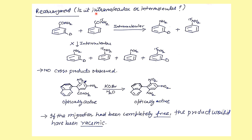The key question about the Hofmann rearrangement: is the migration intramolecular or intermolecular? Studies have shown it is intramolecular. Evidence: if you take a mixture of two different amide compounds and run the reaction, you get the two individual products separately — no cross (mixed) products are observed. This confirms the rearrangement is intramolecular.